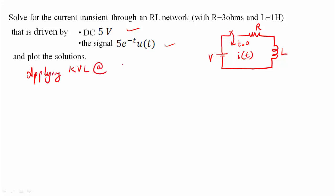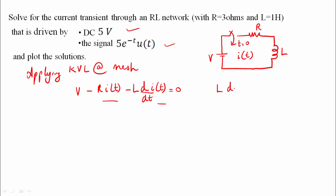Apply KVL at the mesh loop: V minus R into I of t, minus the voltage across the inductance L into d/dt of I of t, is equal to 0. So V minus R into d/dt of I of t, I of t is equal to voltage V.